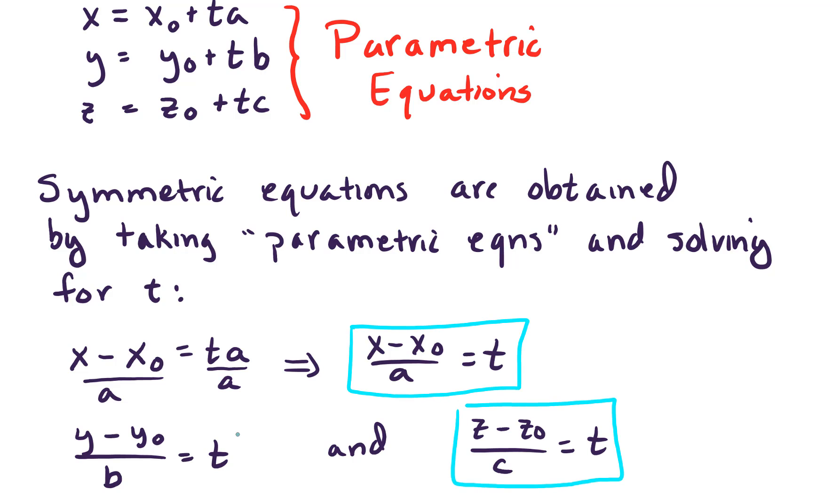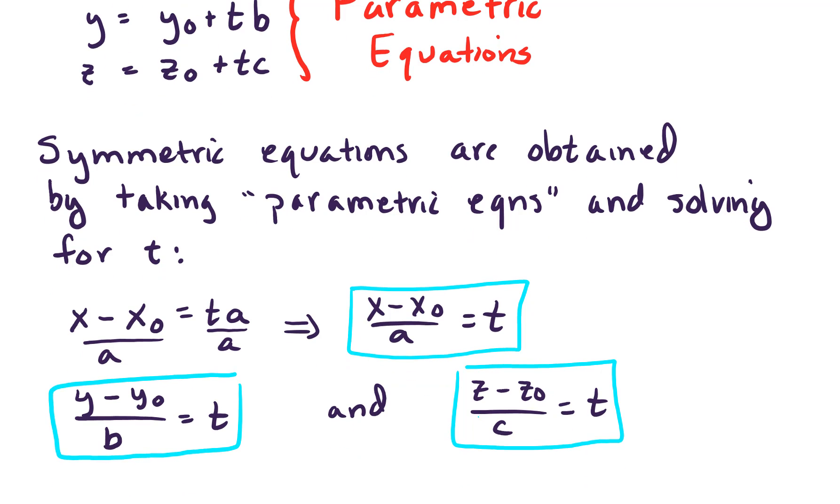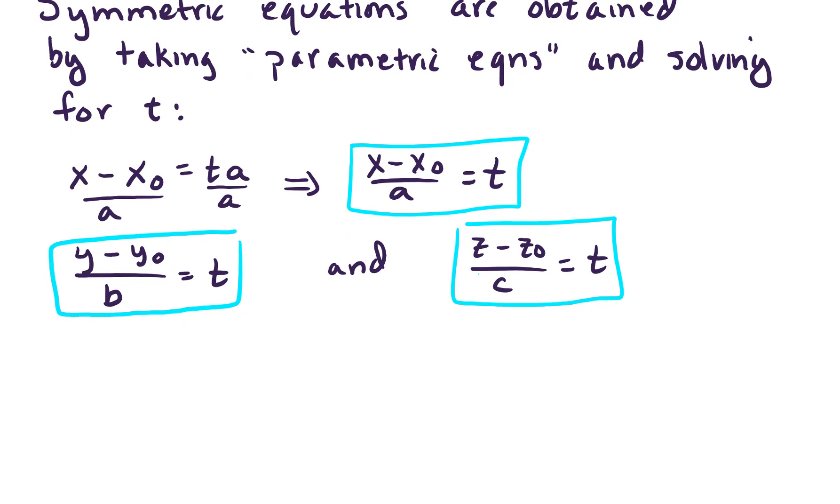And so the symmetric equations are obtained by setting those three pieces equal to each other. So here are our symmetric equations. We've got X minus X-naught over A equals Y minus Y-naught over B and Z minus Z-naught over C. And so these are what we refer to as the symmetric equations.